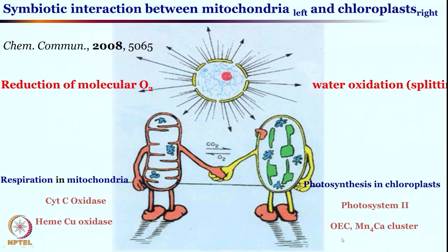On the other hand, in chloroplasts in plants, we have photosynthesis where you have photosystem II — the oxygen evolving complex. We will see in a moment that a manganese-4 calcium compound or cluster will be involved in water oxidation. So water will be converted to oxygen at the chloroplast. These are complementary reactions, requiring 4 protons and 4 electrons for converting oxygen to water, and the reverse is true for water oxidation to make the oxygen molecule.